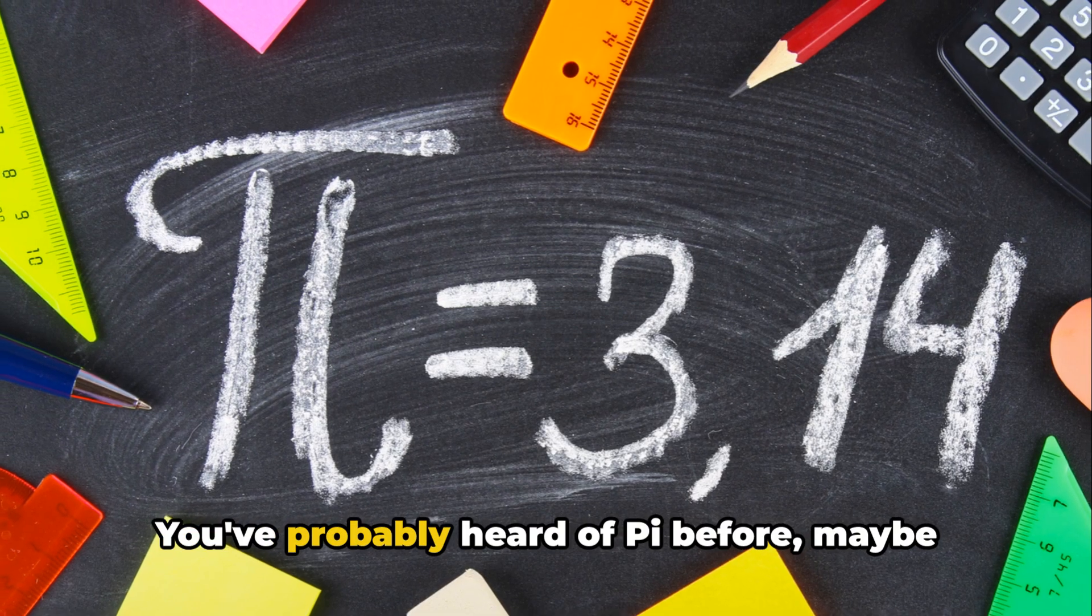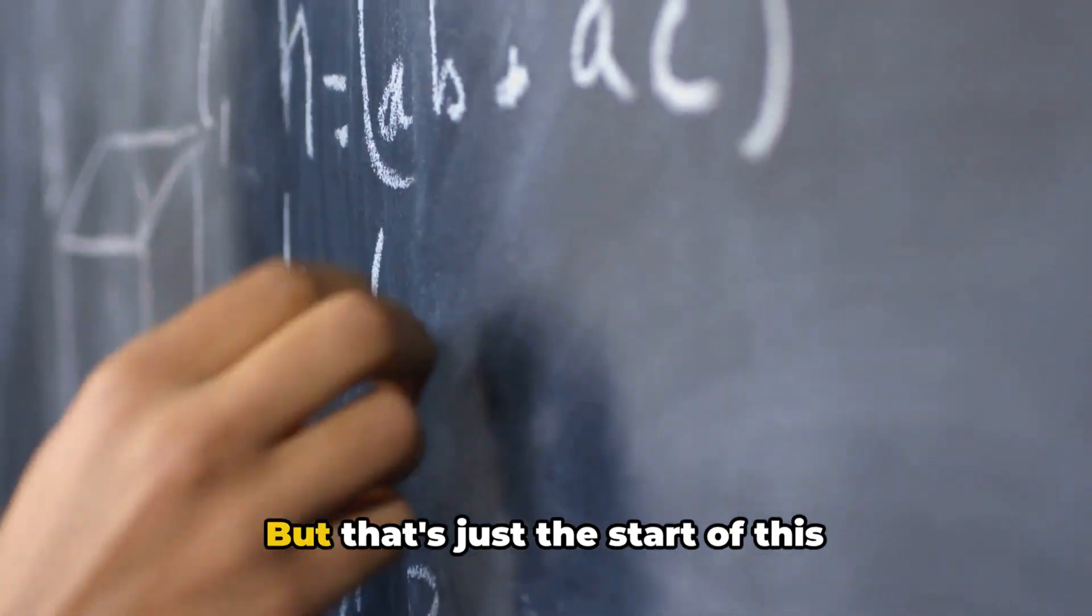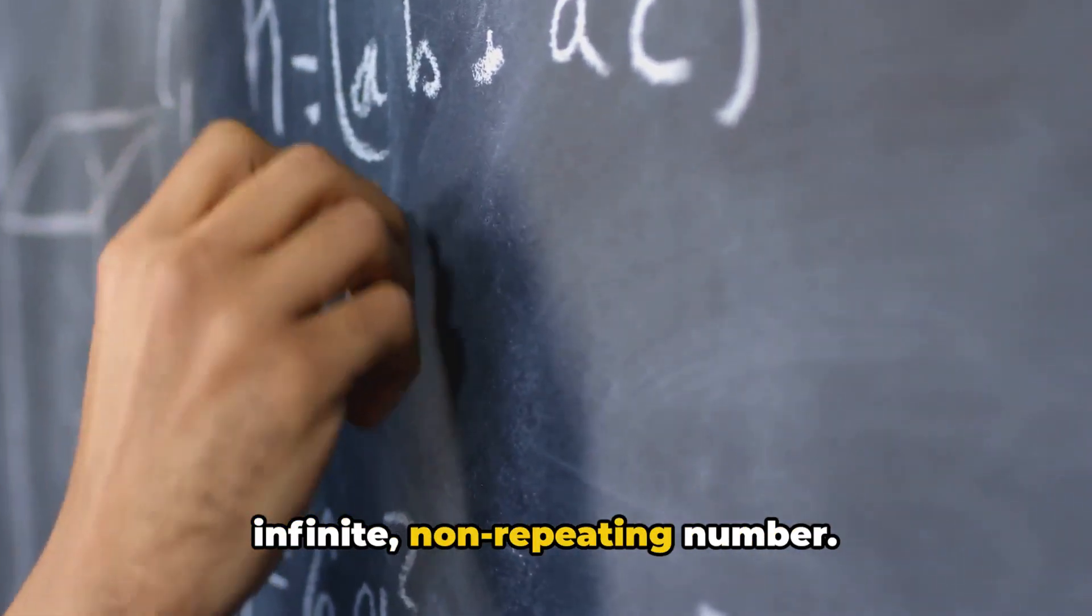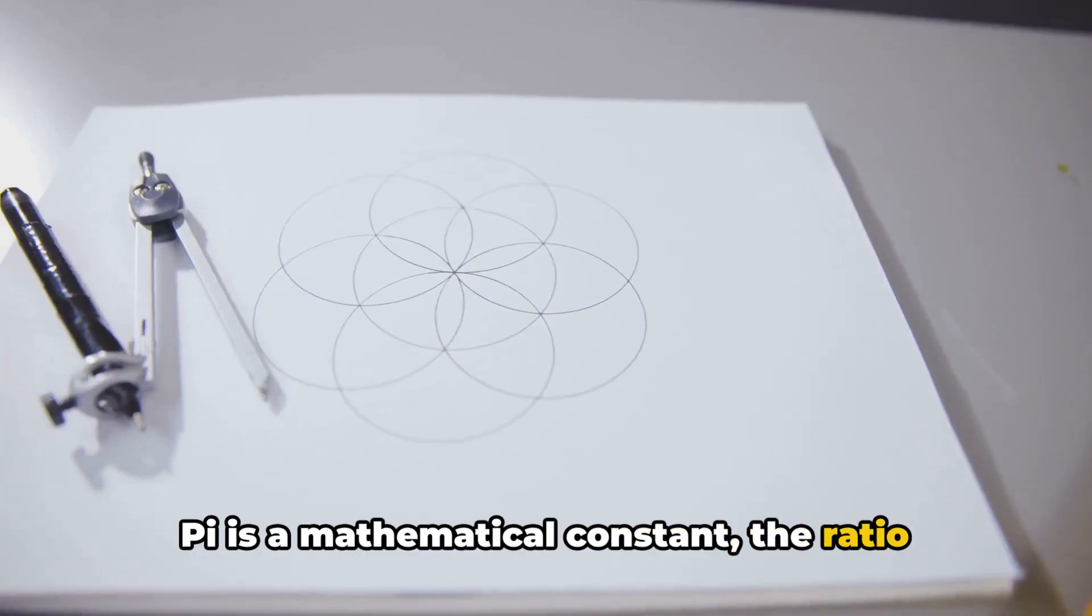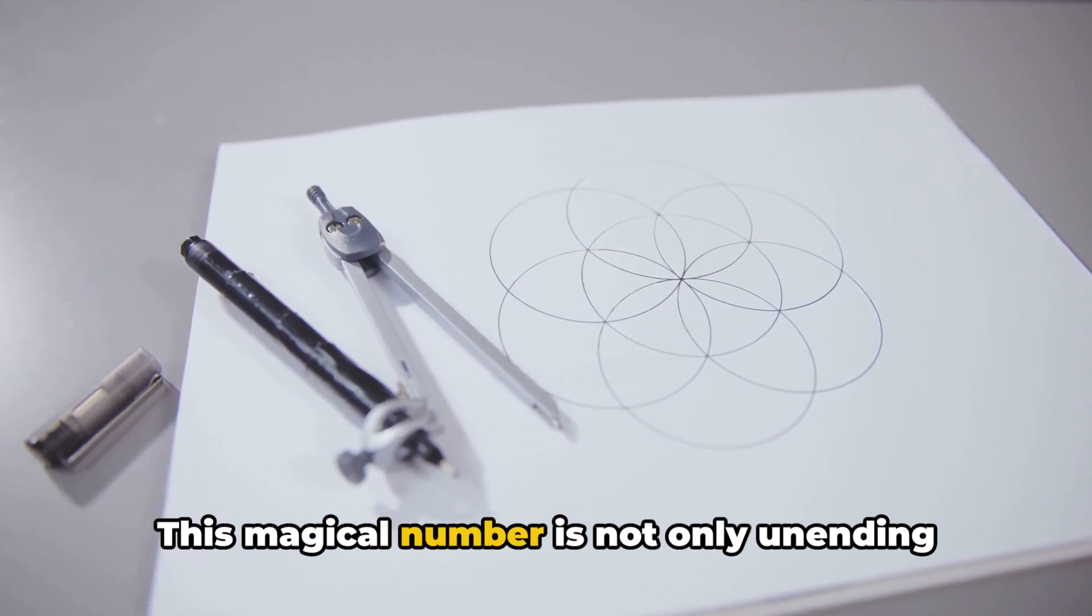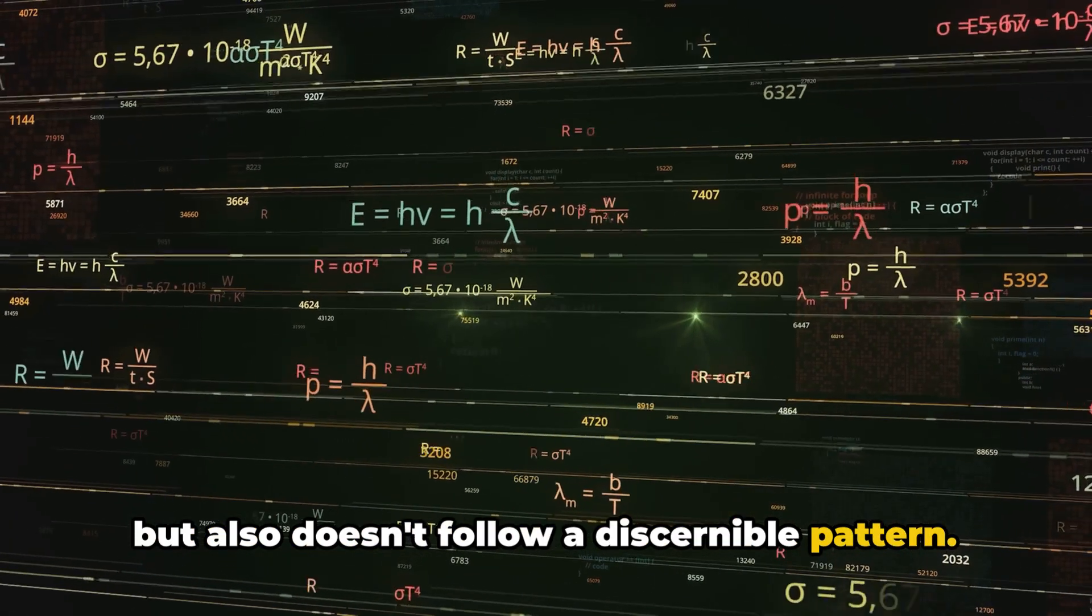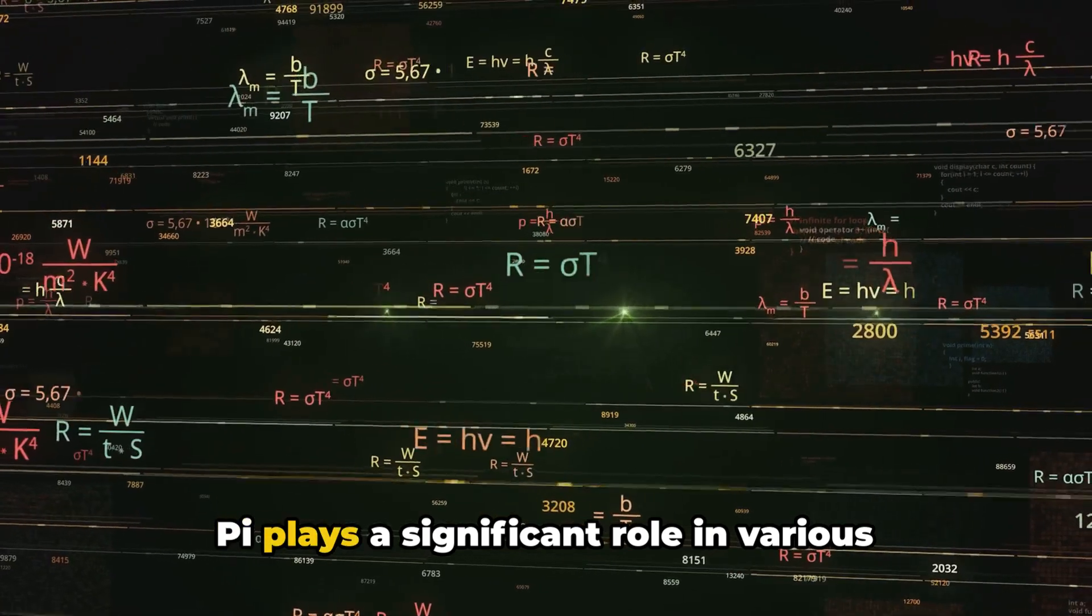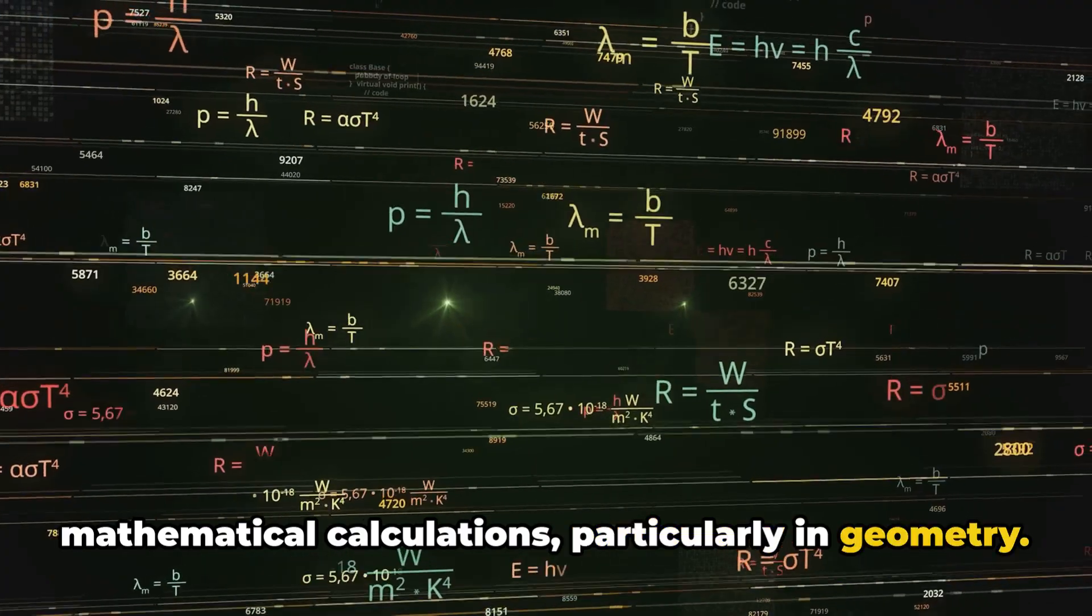Is there a number that never ends and never repeats? Meet pi. You've probably heard of pi before, maybe even know it as 3.14. But that's just the start of this infinite, non-repeating number. Pi is a mathematical constant, the ratio of a circle's circumference to its diameter. This magical number is not only unending, but also doesn't follow a discernible pattern. Pi plays a significant role in various mathematical calculations, particularly in geometry.